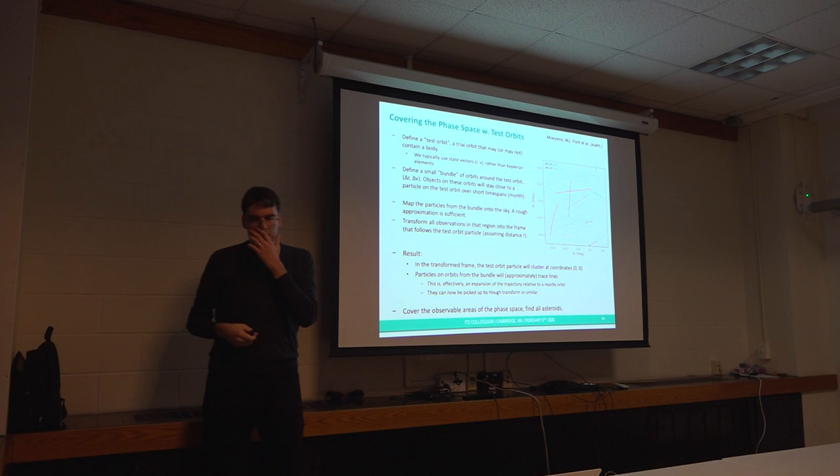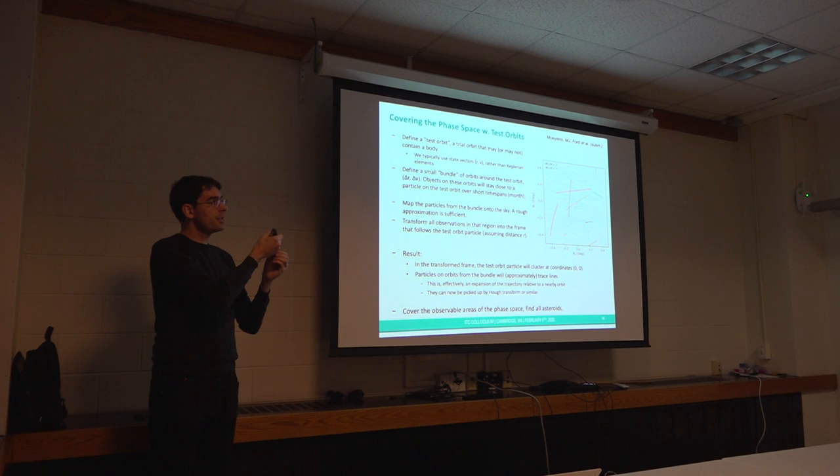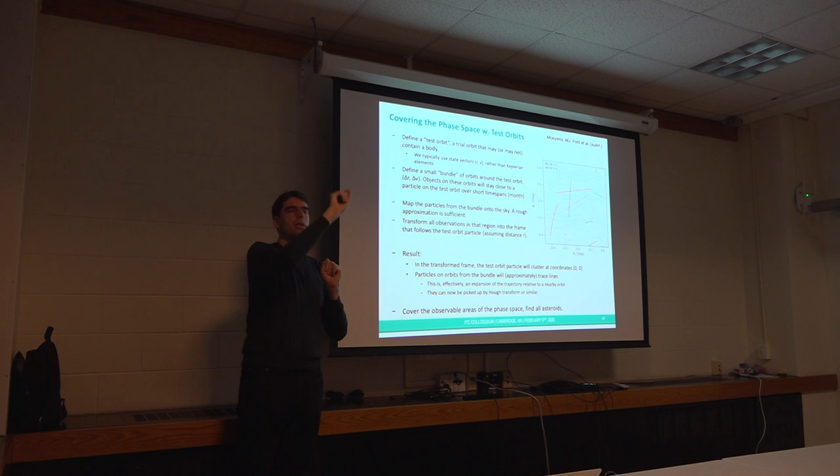And the logic here is this. We take the solar system. If you imagine, if you think about solar system, there are asteroids that move on orbits. And in the sky, we only see individual observations. So what we do is, we say, let's assume that there's an object on some orbit in the solar system. And let's see how that object would move. And then let's transform the observations that we have on the sky into a co-rotating frame with that orbit.